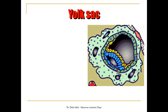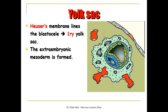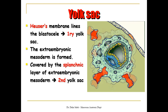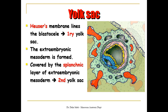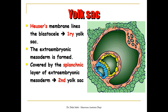Now let's look at how the yolk sac develops. Here you can see two cavities: the amniotic cavity develops dorsal to the epiblast, and the blastocoel lies ventral to the hypoblastic layer. When Heuser's membrane starts to develop from the edges of the hypoblast, the blastocoel changes its name to primary yolk sac. Then the extra-embryonic mesoderm is formed, and cavities appear within it that coalesce and form the extra-embryonic coelom, which splits the mesoderm into somatic and splanchnic layers. The splanchnic layer surrounds the primary yolk sac, which now changes its name to secondary yolk sac.